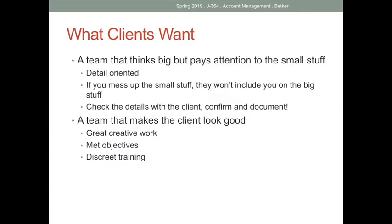Clients also want a team that thinks big but pays attention to the small stuff — detail orientation. Agencies fall down when they get enamored with the creative idea and don't think about the details. There are a lot of details in products and services that clients want to promote. If you mess up the small stuff, they won't include you in the big stuff. They want a team that makes the client look good — great creative work, met objectives, and discretion when training new people.